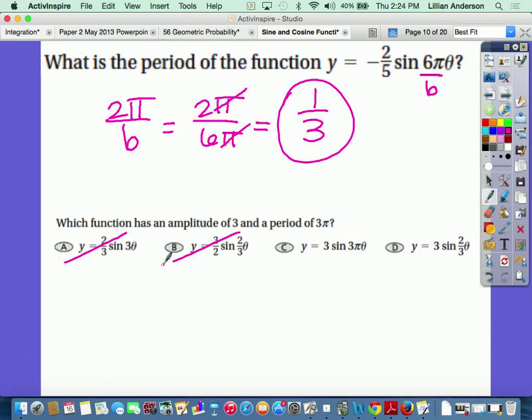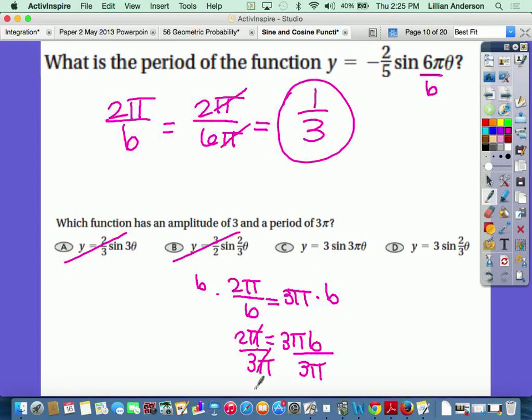Period is 3 pi. That means that you have to set your formula to find your period equal to 3 pi. So then you multiply both sides by b to get 2 pi equals 3 pi times b. Then you divide by b. And so my pi's cancel out so my b is 2 thirds. So your answer is d.